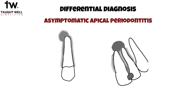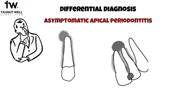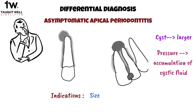Radiographically, they often appear quite similar, making it difficult to positively differentiate between the two based on x-rays alone. However, there are certain indicators that may suggest the presence of a cyst. One such indication is the size of the lesion — a cyst typically tends to be larger than an asymptomatic apical periodontal lesion. Moreover, the continuous pressure exerted by the accumulation of cystic fluid may lead to the spreading apart of the roots of adjacent teeth, which can be observed on radiographs.